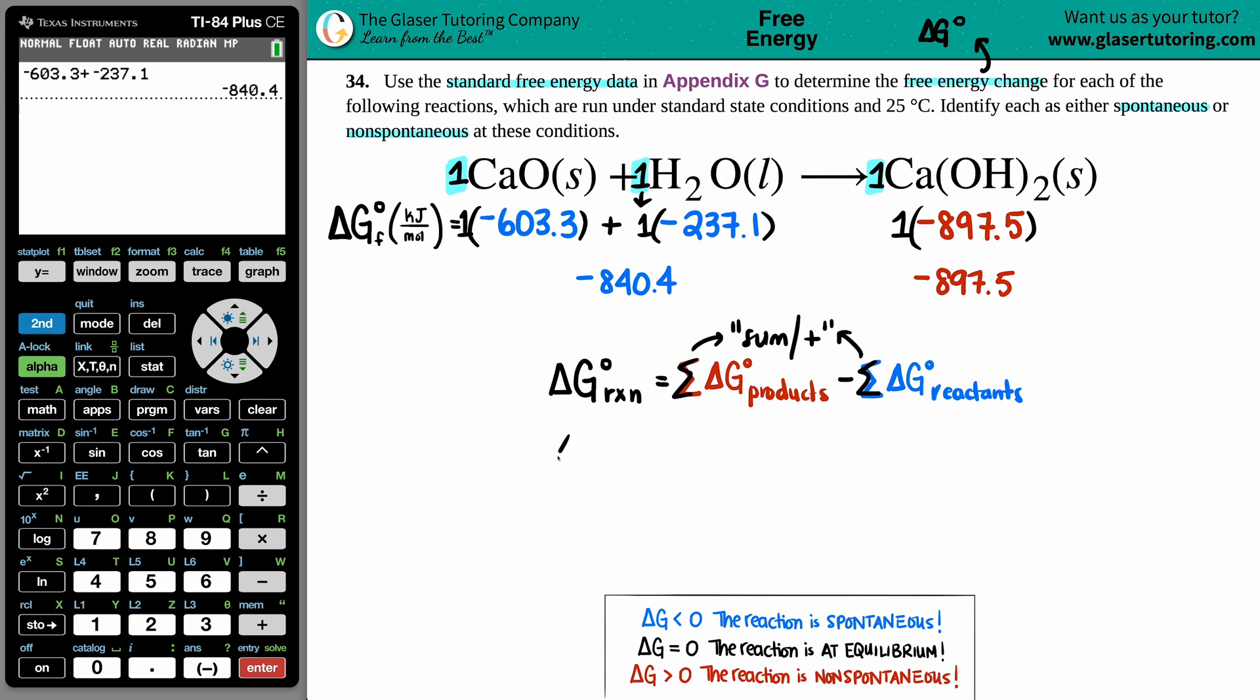So let's go for it. Delta G for the whole entire reaction equals products minus reactants: -897.5 minus -840.4. Minus a negative, that's keep-change-change, you're adding a positive. But I'm going to put this into the calculator and you'll see that it's the same thing.